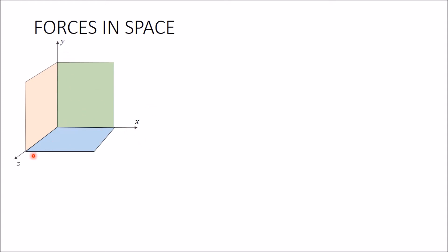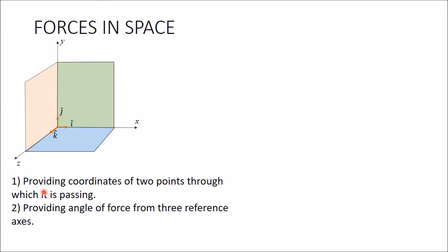A vector pointing in the x direction with magnitude one is represented by i — the unit vector along the x-axis. The unit vector along y is j, and along z is k. Using these unit vectors i, j, and k, we can represent any force. A force can be represented by providing coordinates of two points through which it passes, or by providing the angle of the force from the three reference axes.